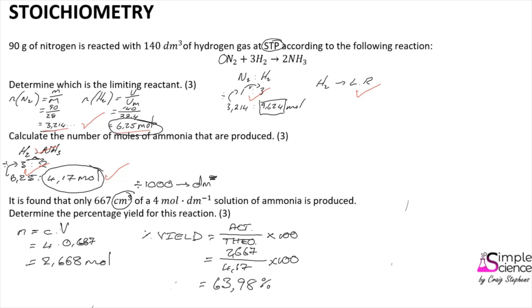This reaction has a percentage yield of 63.98%, meaning it produces only 63.98% of what is theoretically expected. The marks here are: one mark for calculating the number of moles actually produced, one mark for writing the percentage yield formula correctly, and one final mark for the correct answer.